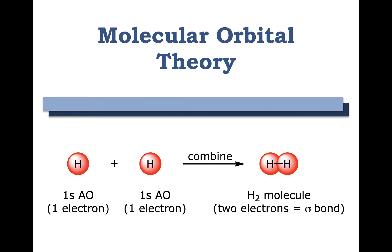An example for hydrogen is shown here. The 1s atomic orbital for one hydrogen is here, and that has one electron. Here's a second 1s atomic orbital with one electron. When they combine, they form the hydrogen H2 molecule, which has two electrons. The two electrons form the bond, which is referred to as a sigma bond.